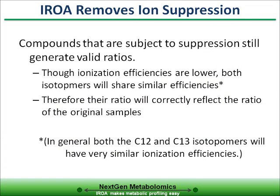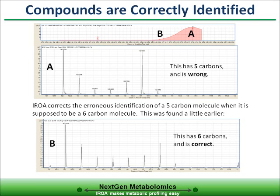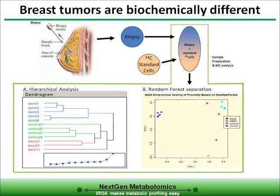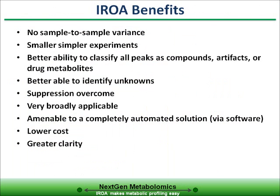With AROA, suppression is removed as a source of variance or error. In addition, unknown compounds may be more accurately characterized. AROA will make it possible to characterize a tumor to a specific tumor type more accurately and faster than current technologies. In summary, the AROA technique solves a number of current sources of error on current metabolic profiling platforms.